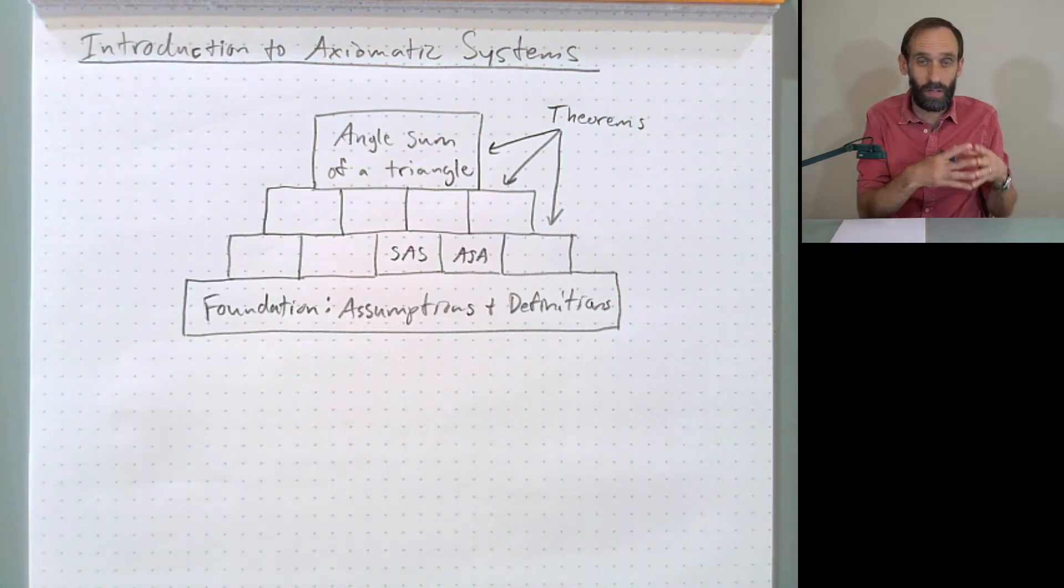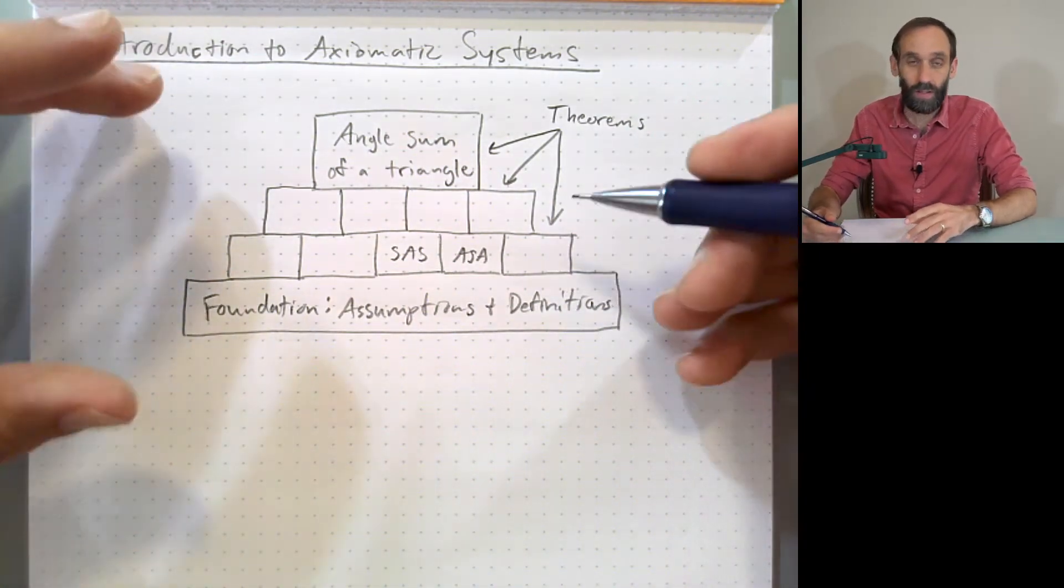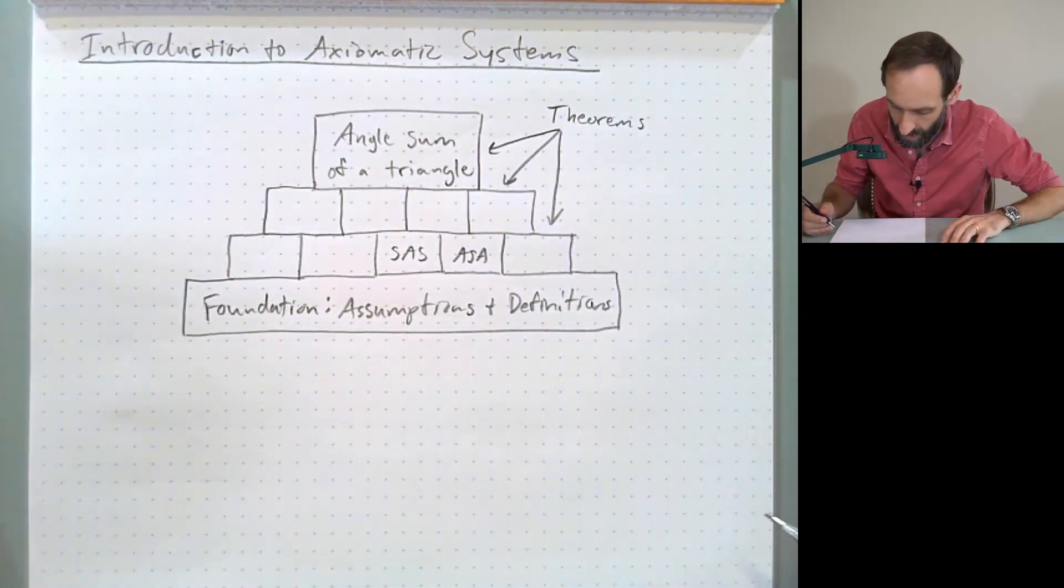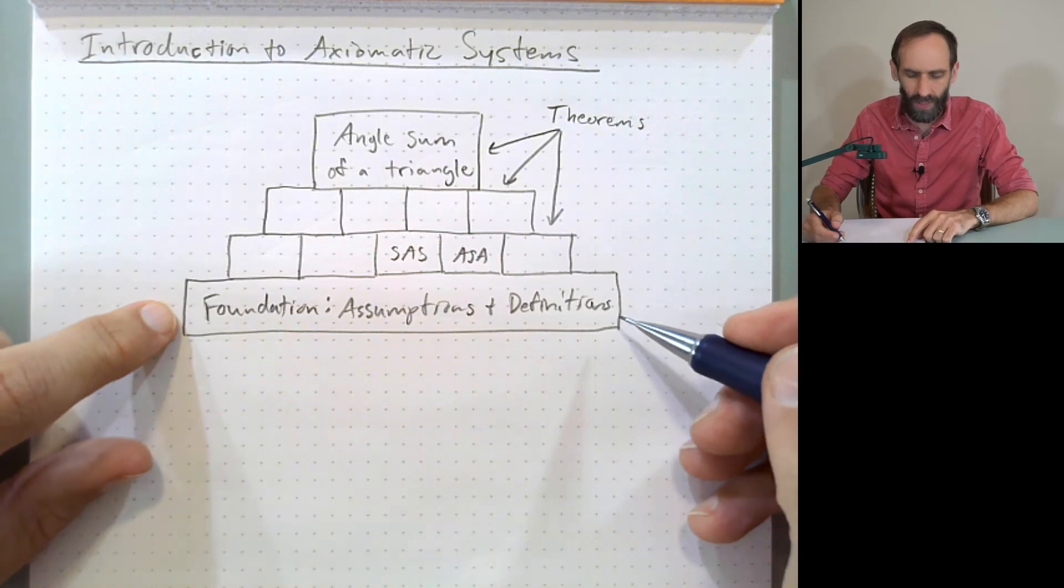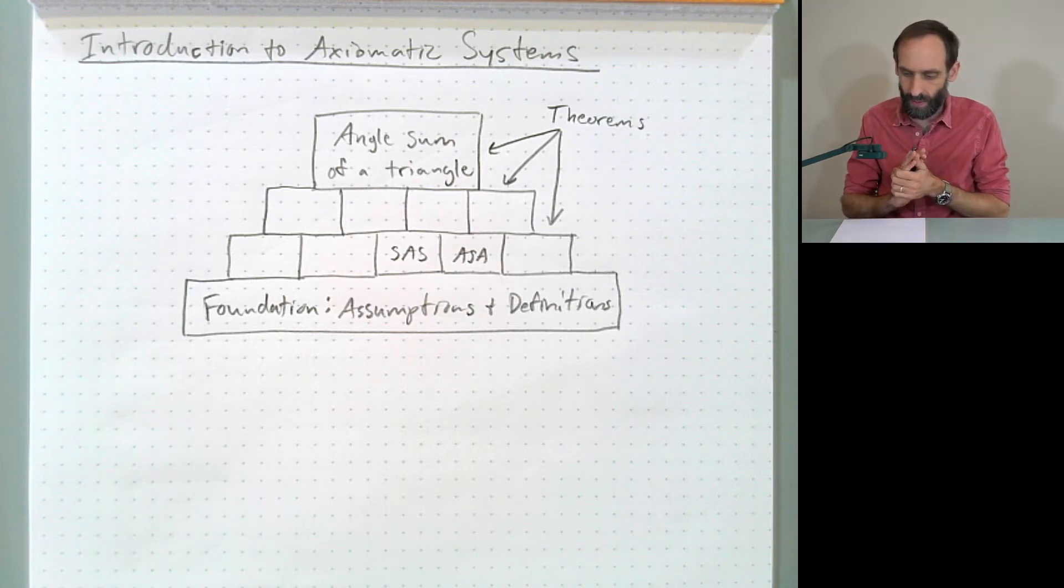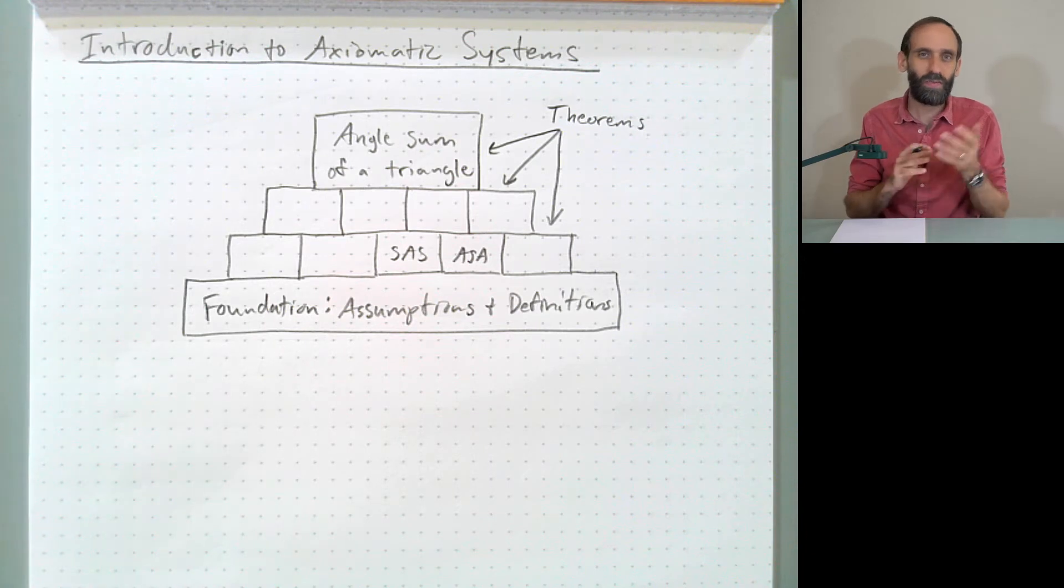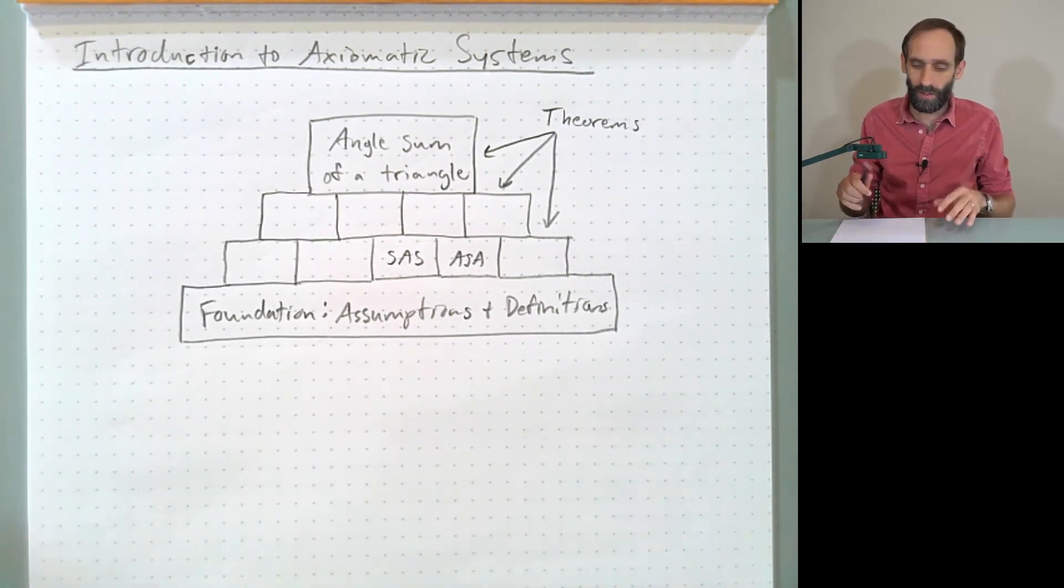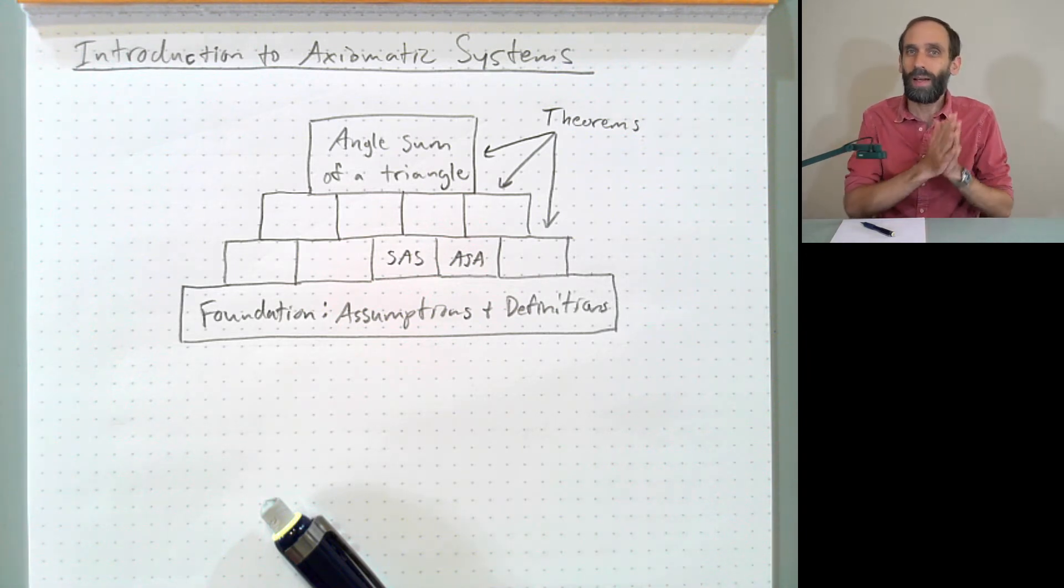And so we have to start with assumptions and definitions before we can use logic to come up with any theorems, any of these bricks. But this leads to the question of what about the foundation? What is the foundation on? Is the foundation just sitting there? This kind of reminds me of the question, there are different versions I've heard of this anecdote, but typically it's ascribed to the physicist Richard Feynman.